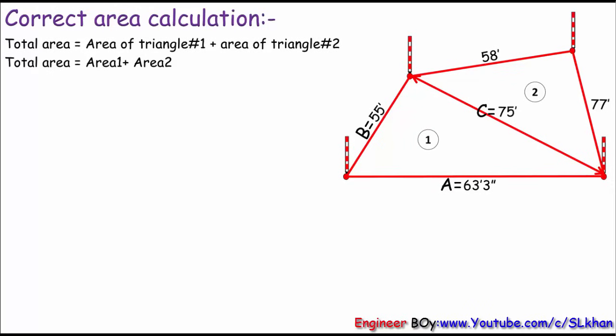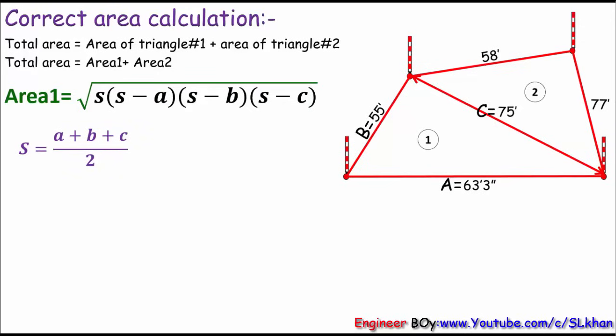S equals summation of all sides divided by 2. You can say s equals 55 plus 63.25 plus 75 divided by 2. Do the math with this and we can get the semi-perimeter of the triangle equals 96.625 feet.